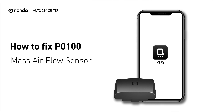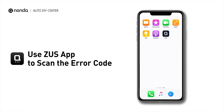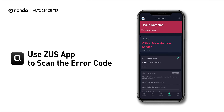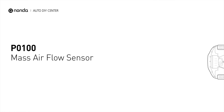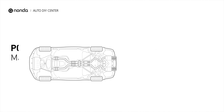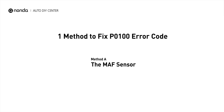If you are getting a P0100 error code, this video is going to show you one practical solution to fix the error code at home. Use the Zeus app to scan your vehicle and see the error code P0100. P0100 is the general code for a problem with the mass airflow sensor or circuitry. Here is one simple DIY method you can try to solve this problem.